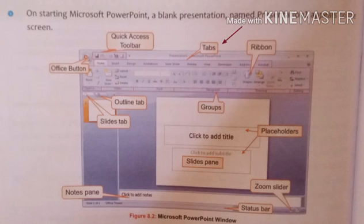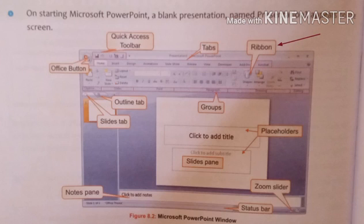Then we have tabs. Tabs are actually the menus. Each tab is related to a specific category — for example, we have tabs like Design, Animation, and Slideshow — and each tab has its related commands. Below the tabs we have the Ribbon. The Ribbon contains the exact commands related to each tab. When you click on a tab, the ribbon updates to show all the commands available for that tab.